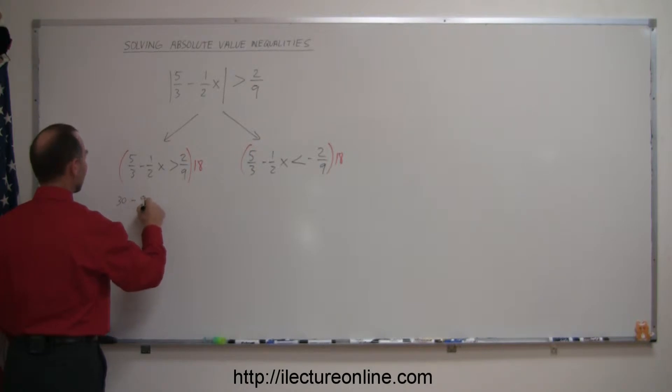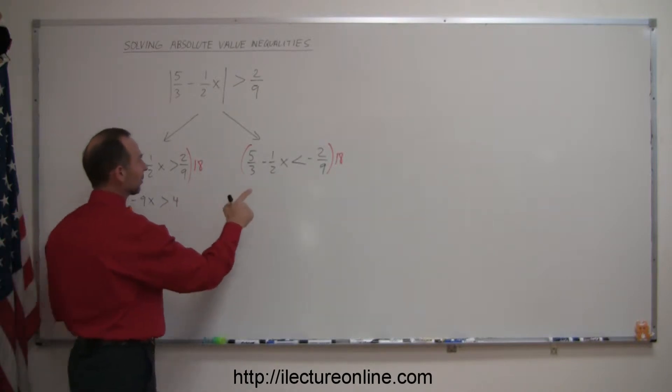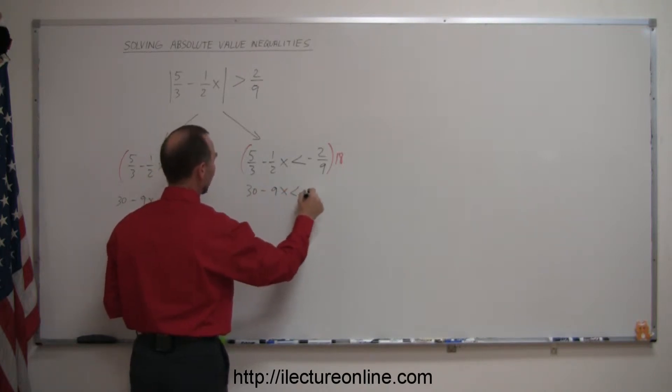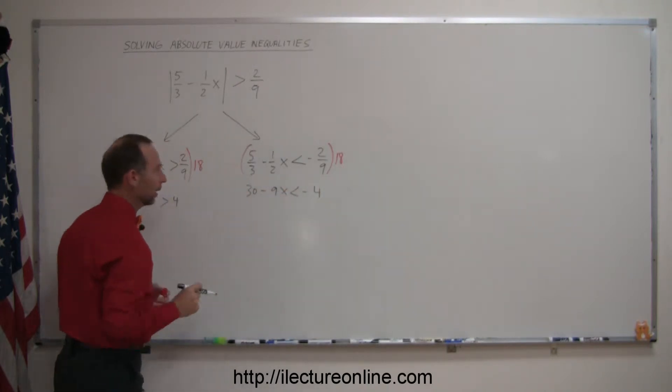x greater than 9 goes into 18 twice, times 2 is 4. And over here same thing: 3 goes into 18, so it's the same thing - that would be 30 minus 9x less than minus 4. There we go.